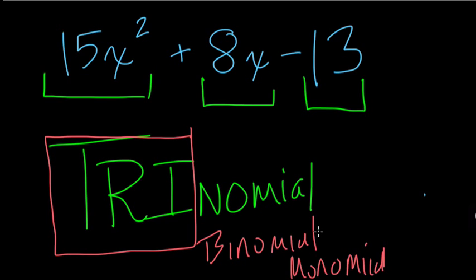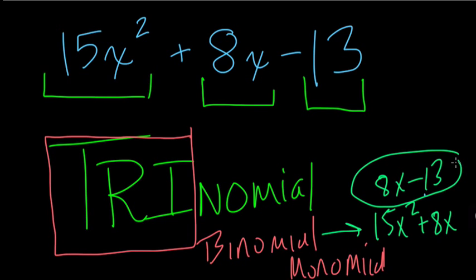So you can have an example here, a binomial would be something like 15x squared plus 8x, or 8x minus 13. Either way, these two pieces themselves would be binomials.